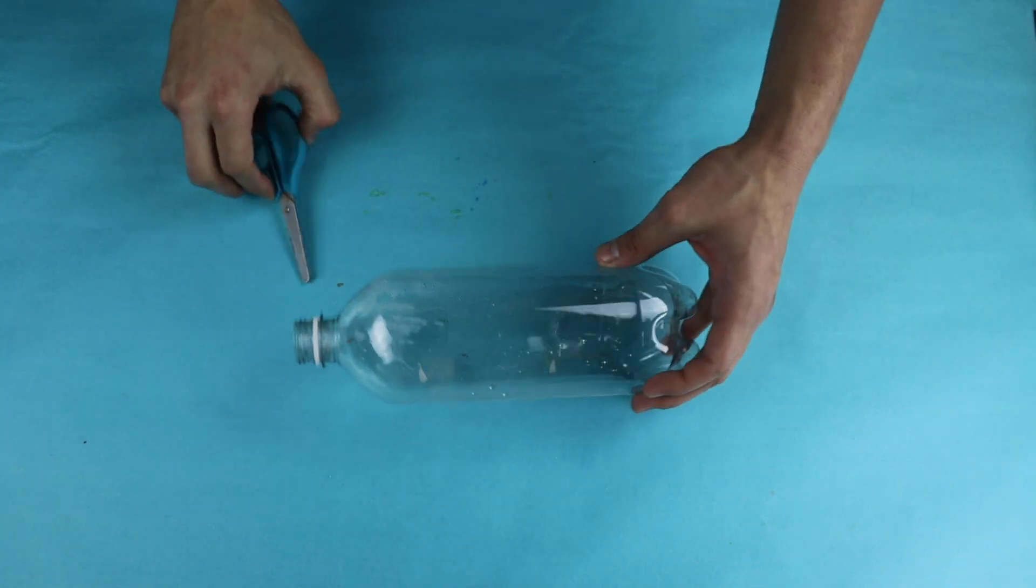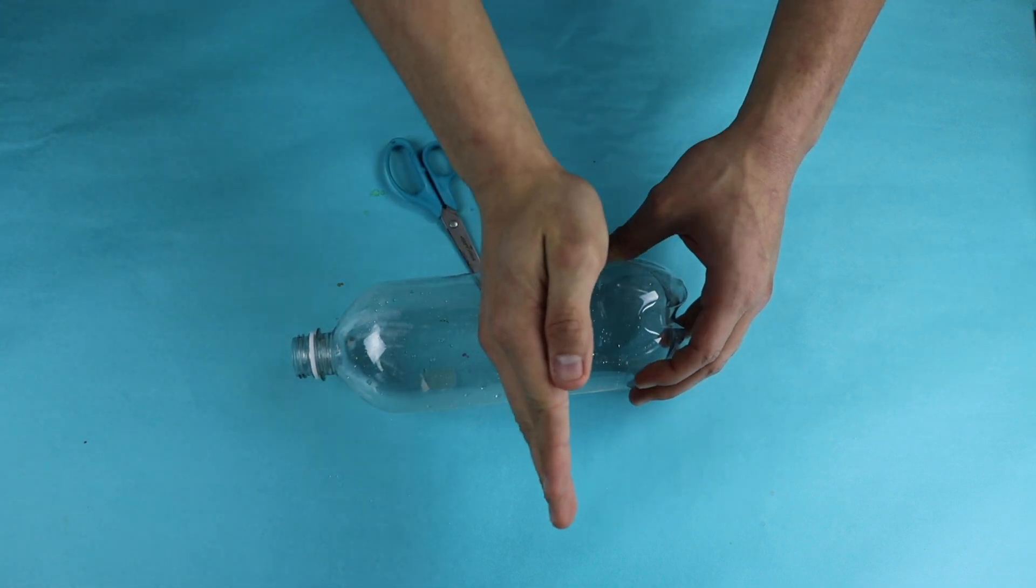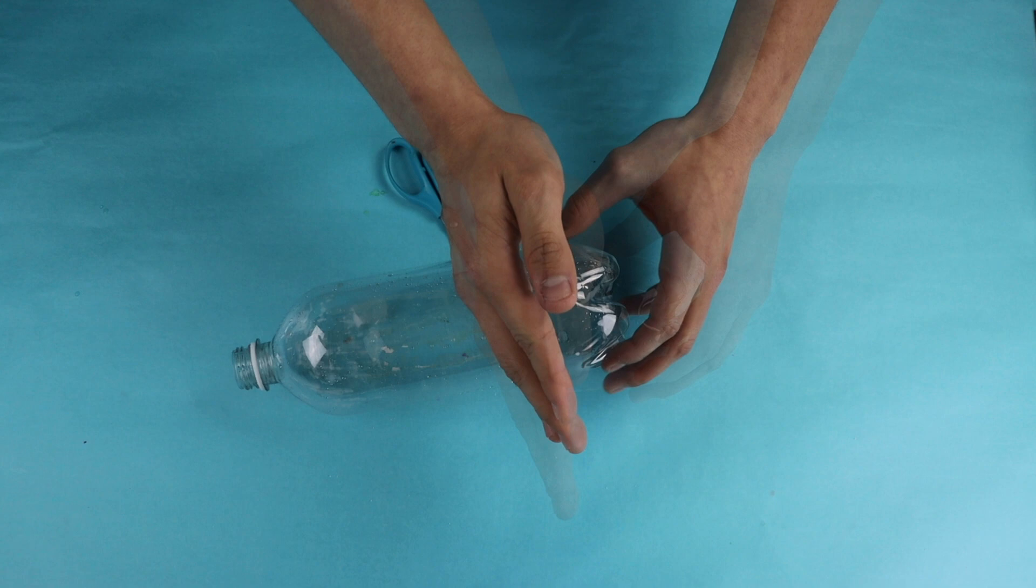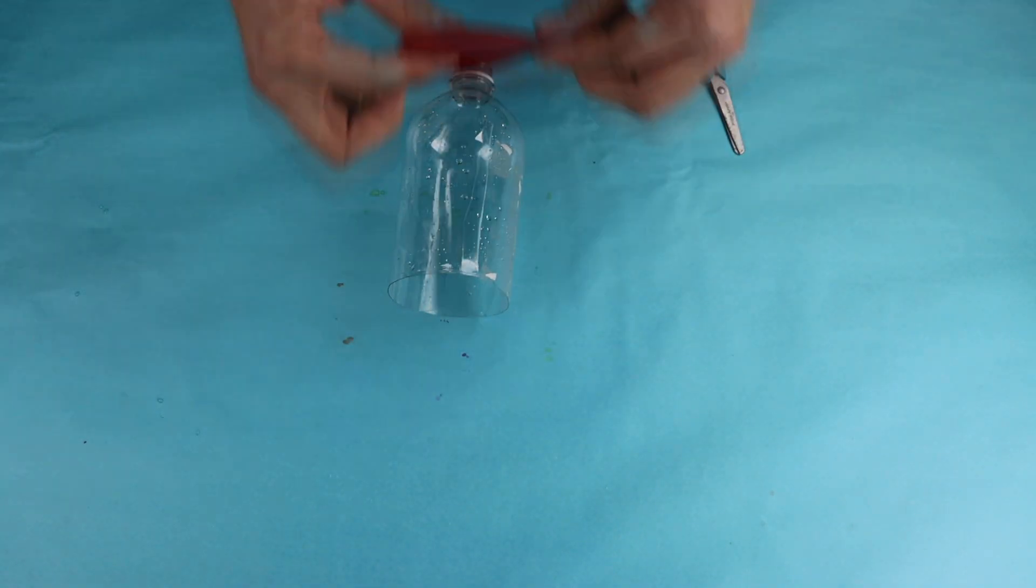Step five, make sure you ask an adult to help you with this step as it can be very dangerous if not done properly. You're going to cut the bottle in half and make sure you choose a sturdy bottle to help you further along the line.